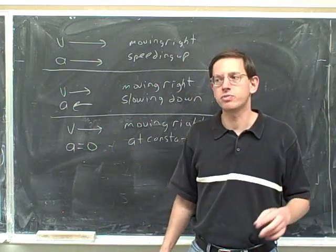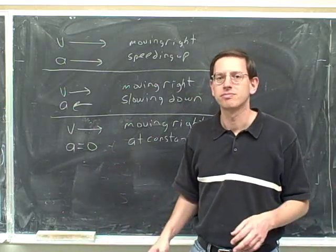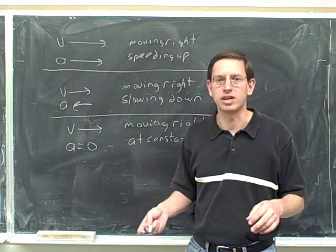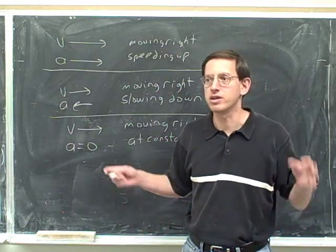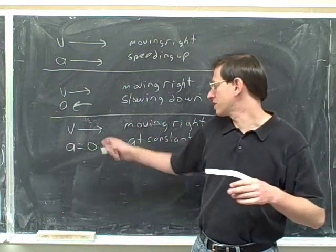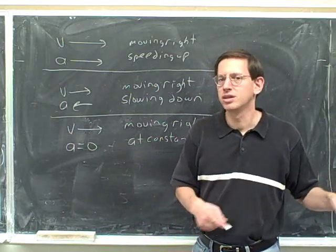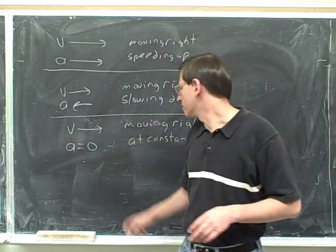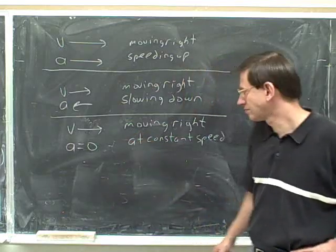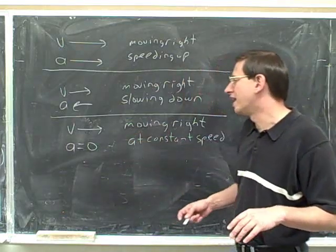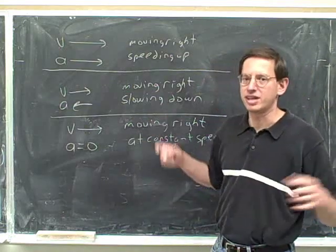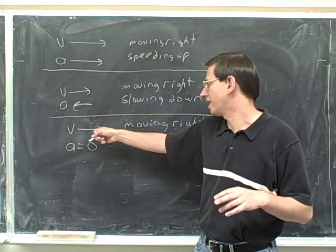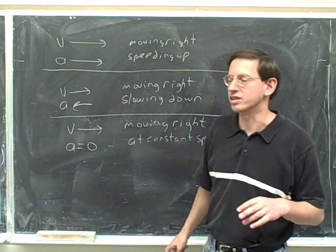Acceleration just tells you whether you're speeding up or slowing down. In one dimension, the acceleration just tells you whether you're speeding up or slowing down — it doesn't tell you whether you're moving or not. If the acceleration is zero, it doesn't mean you're not moving. It just means you're not speeding up or slowing down; you're moving at constant speed. Or of course you could be motionless at constant speed of zero, but that's not the case here because we had a velocity, so this was definitely moving.